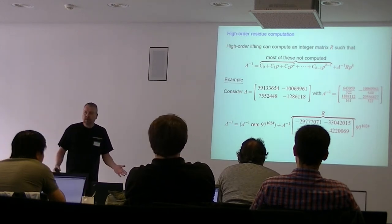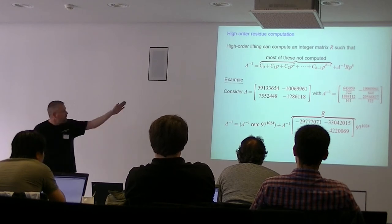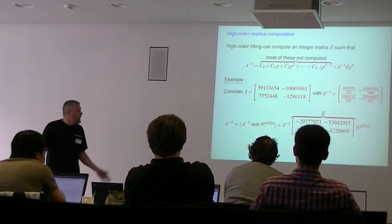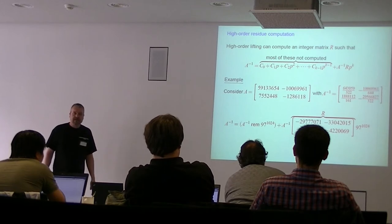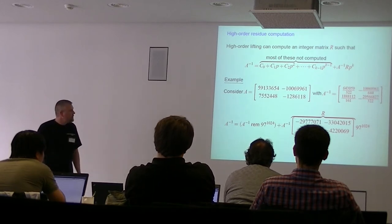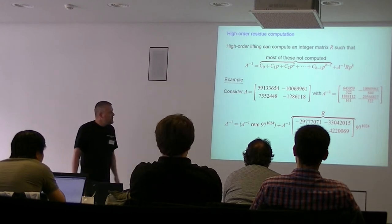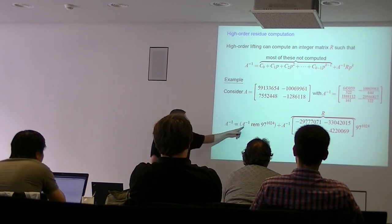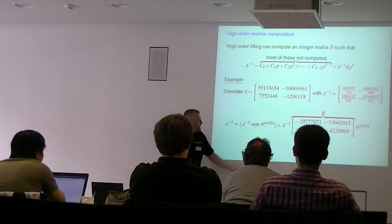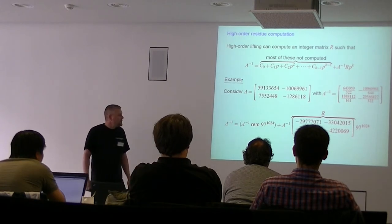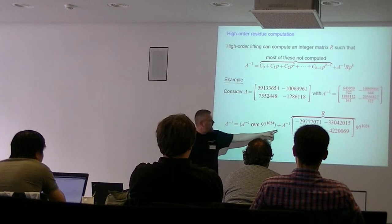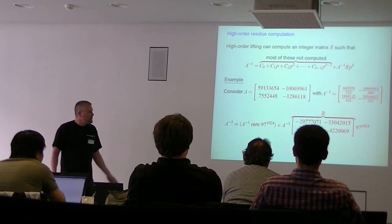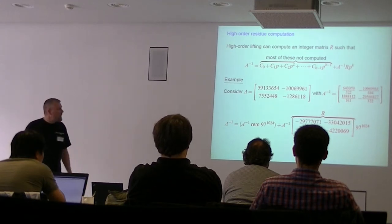High-order lifting — this variant of quadratic lifting — lets us jump over most of the Cᵢ coefficients, going from 1 to 2 to 4 to 8 to 16 very quickly. It also computes the residue, which is nice. Here's an example: matrix A, and its inverse expressed with a large integral part at precision 97^1024. The residue is what's left over and captures the fractional part. The object A inverse × R contains all the interesting information.